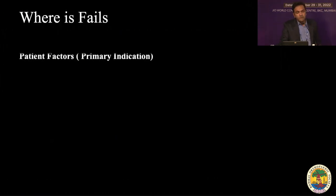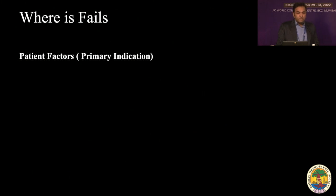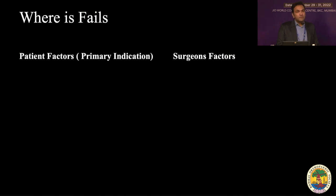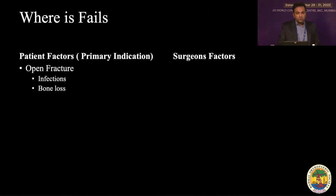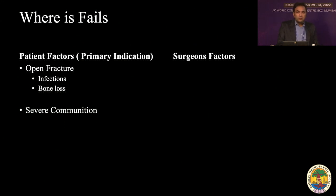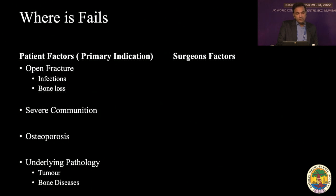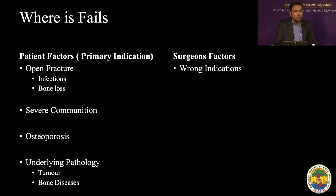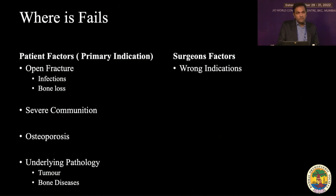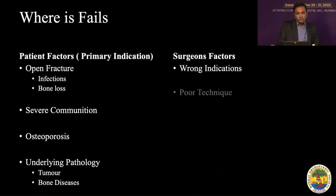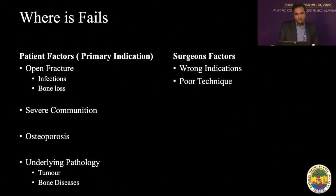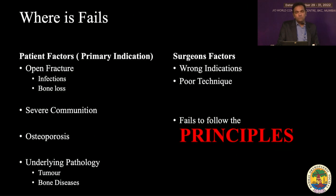But then where does it fail? It fails because of two reasons: either patient factors or surgeon factors. Patient factors are generally the primary indication why you needed augmentation in the first place — an open fracture leading to infection, bone loss, or severe comminution that augmentation was not enough to support. Osteoporosis or an underlying bone disease like a tumour. Or a surgeon factor — where augmentation was not required; you could have gone with a single plate, but trying to put an extra plate gave an insult to the biology and blood supply, leading to non-union. Or poor technique, which is the main cause — the surgeon fails to follow the principles of fracture union.